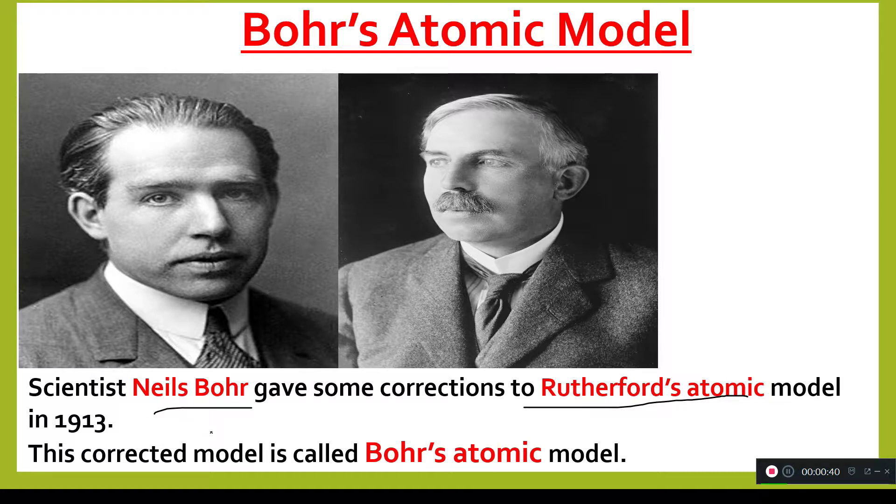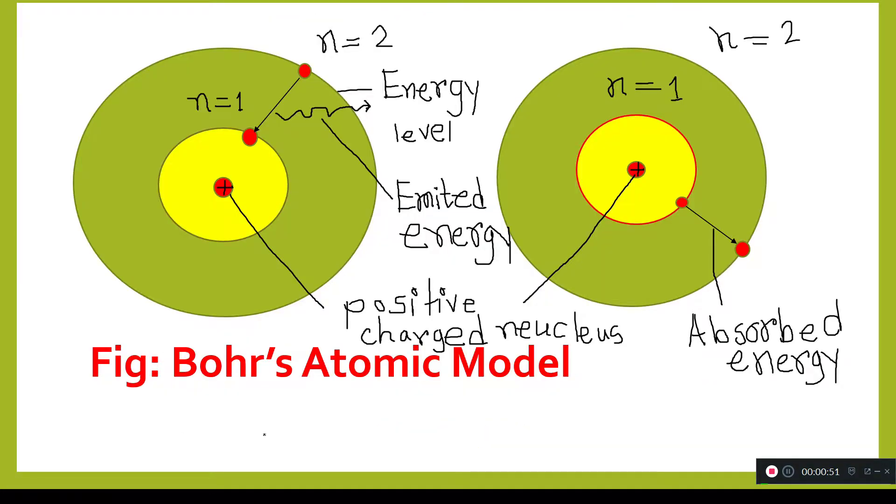Around the nucleus there are circular stable orbits on which electrons move. You can see this is a positively charged nucleus here, and here is emitted energy. This is the energy level.